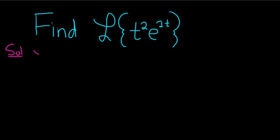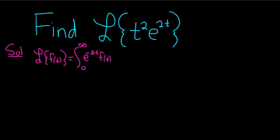Recall the Laplace transform of a function of time f(t) is equal to the improper integral from 0 to infinity of e to the negative st times our function of time f(t), and then dt. So in this particular example, f(t) is equal to t squared times e to the 2t.